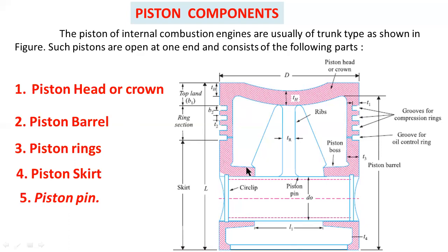Here you can observe the cross-sectional or half-sectional view of a piston. The hatching portion indicates the wall thickness. 'th' is the thickness of the piston head. Capital D is the outer diameter of the piston, also considered as the bore diameter.